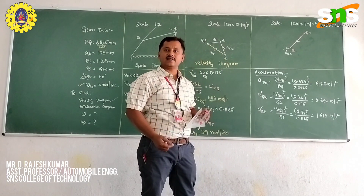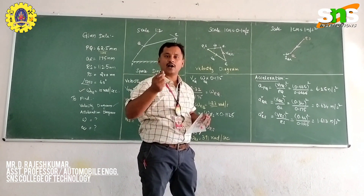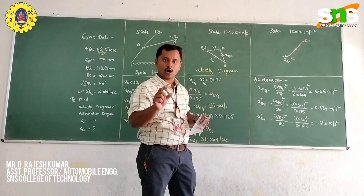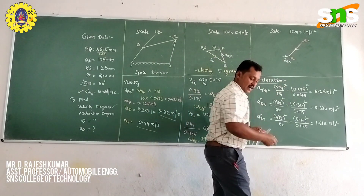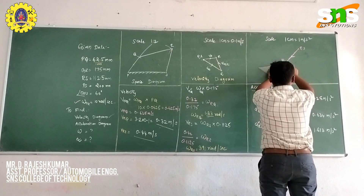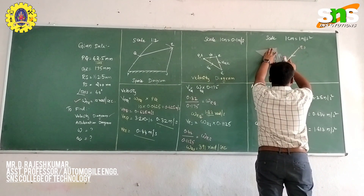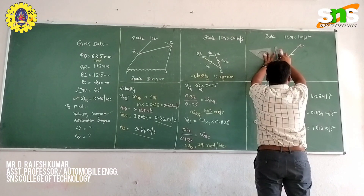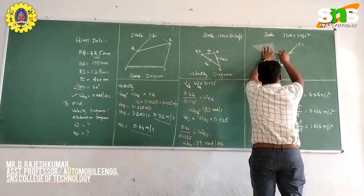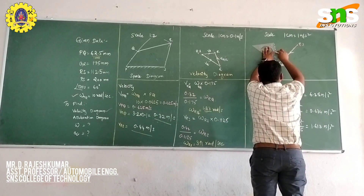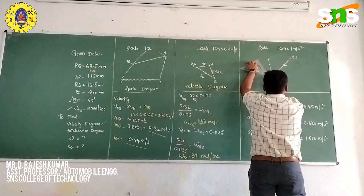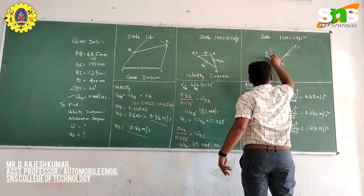Once the radial component is drawn, draw the tangential component. The tangential component is perpendicular to the radial component. From the end of the radial line, take a perpendicular line — this is the tangential component for QR. This line is the acceleration tangential component Q1.